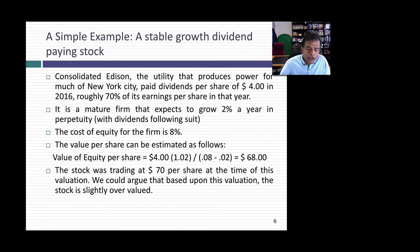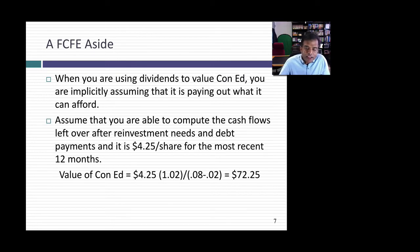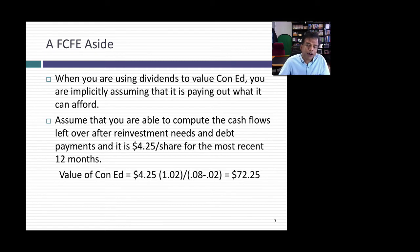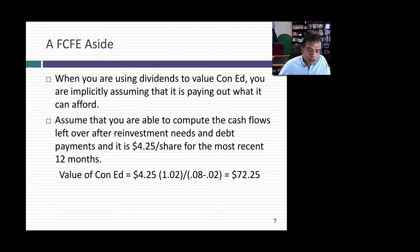When you use the dividend discount model, you're assuming Con Ed is paying out what it can afford to. But suppose you compute potential dividends — free cash flow to equity: cash flows left over after taxes, reinvestment needs, and debt payments. Last year that was $4.25, while Con Ed only paid $4. Companies often hold back cash. To value Con Ed on a free cash flow to equity model, I replace the $4 with $4.25 — same growth rate, same cost of equity. The present value is $72.25. Increasingly, you should put your faith in free cash flows rather than trust companies to pay out what they can afford to in dividends.